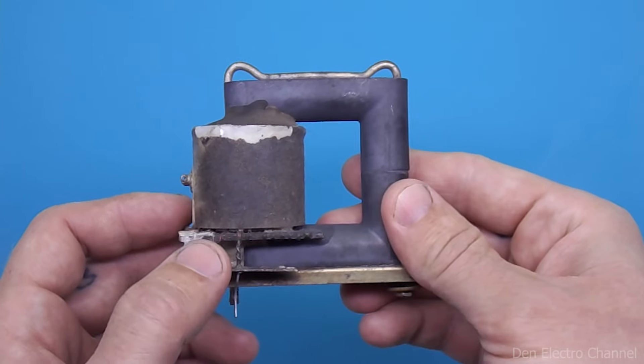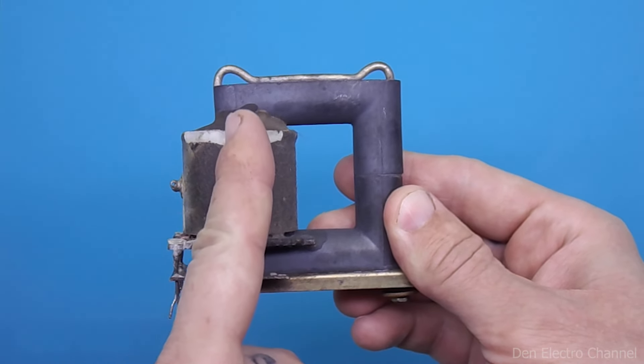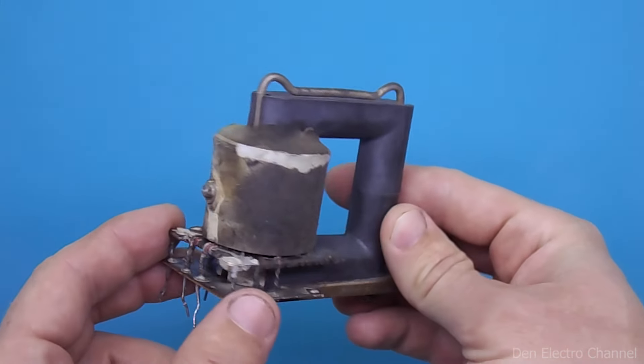There are many windings on it that are almost impossible to unwind. Therefore, it is easier to cut the entire coil.